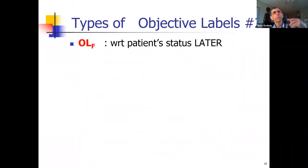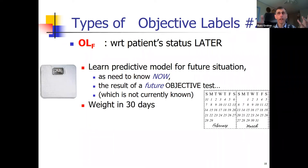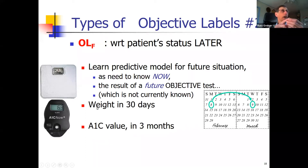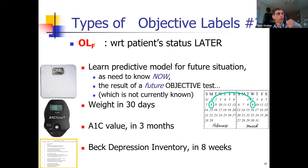More interesting is when you want a patient's status later, in the future. I want to learn to predict a model about a patient now, based on results of a future objective test. For example: patient weight in 30 days — in 30 days I can measure it, but today I don't know it. Or A1c in three months for a diabetic. Or the Beck Depression Inventory eight weeks from now. These are situations where there's an objective measure later, but I want to predict it now.